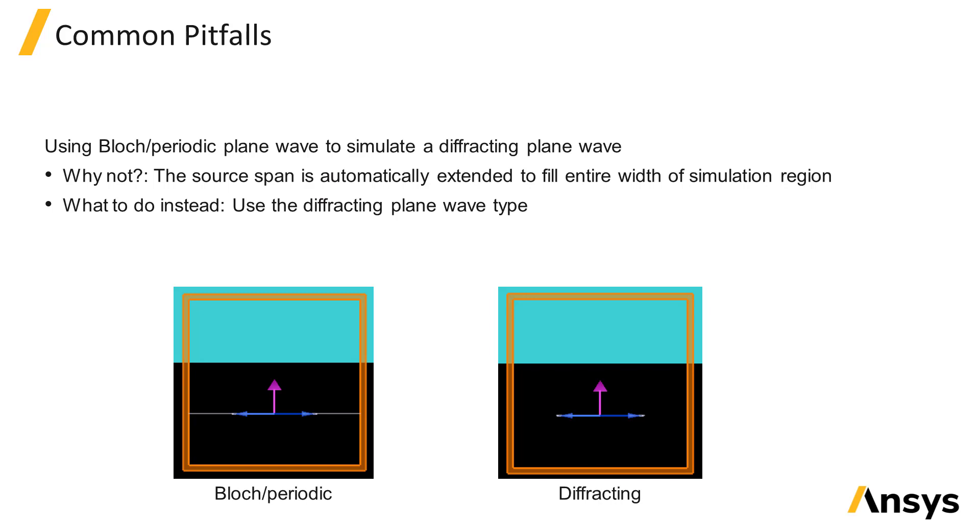The first one is trying to represent a diffracting plane wave by using the Bloch periodic plane wave type and setting the span of the plane wave to represent the aperture size. The reason this can't be done is because the source injection plane will automatically be extended to the full width of the simulation region, so you can't specify a smaller span. You'll need to use the diffracting plane wave type to set a specific span.